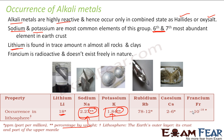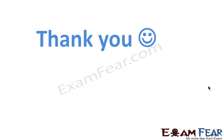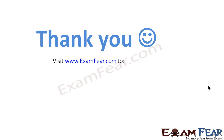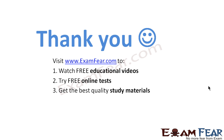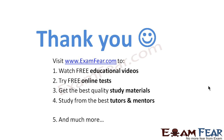Sodium and potassium are the most available alkali metals, but not in free state. They are almost the sixth and seventh most abundant elements in the earth's crust. Visit examfear.com to watch free educational videos, try free online tests, get the best quality study materials, and study from the best tutors and mentors.